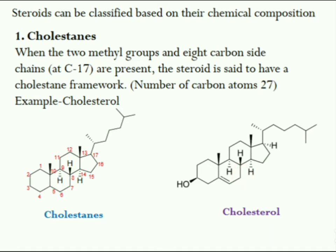The next category is choliens, a triterpene which contains 24 carbon atoms. For example, cholic acid. Next is androstan, a C-19 steroid with a gonane core. For example, testosterone. Next is pregnins, also known as 17-beta-ethyl androstan, a steroid containing 21 carbon atoms. For example, progesterone.